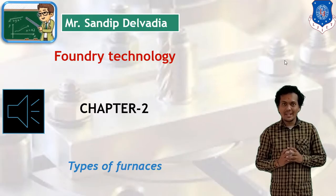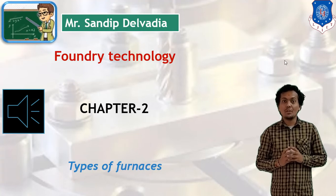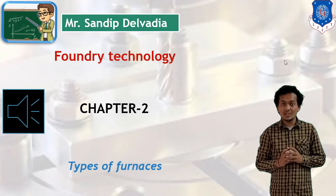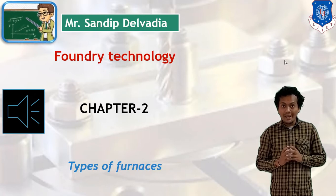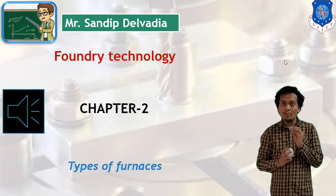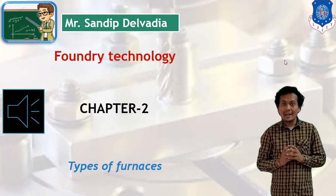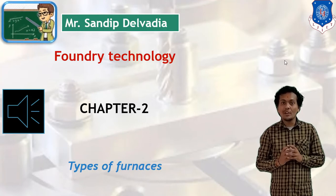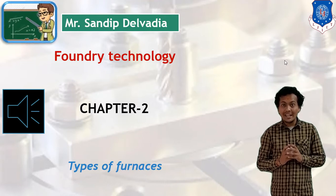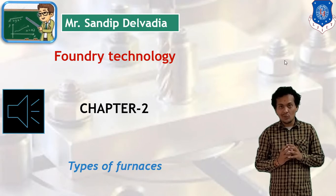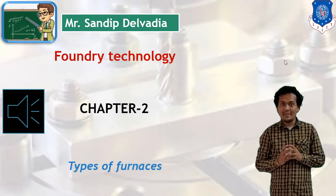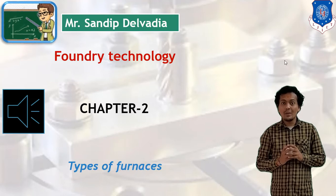In manufacturing technology, we have been going through foundry technology. In the casting process, our purpose is to make the product with the help of liquid metal. Our first step is to make ready molten metal — to convert solid metal into liquid form. After that, we pour this liquid metal into a cavity according to the product shape, and cooling and solidification will occur.